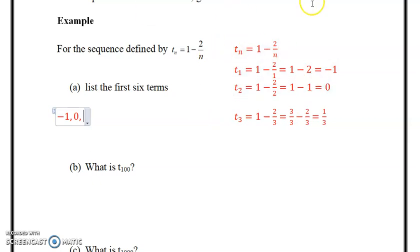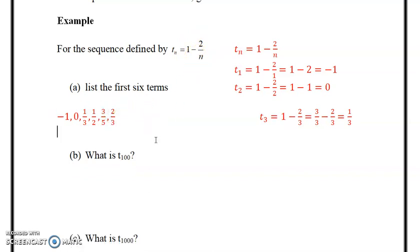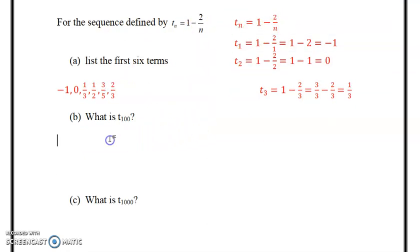We're going to get some fractions happening here, so we got 1/3. The next one, we'll just do that quickly in our heads. If we put a 4 in for n, that would be 2/4, which would be 1/2. 1 subtract 1/2, so the answer would be indeed 1/2. Do the next one: put 5 in for n, we'd have 1 subtract 2/5, which is 3/5. Then we put 6 in: we have 1 subtract 2/6, which is 1 subtract 1/3, which would be 2/3.